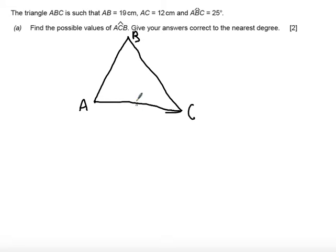We're told the length AB is 19 centimeters so we can label that side 19 centimeters. AC is 12 centimeters so I can label that side 12 centimeters and the angle ABC is 25 degrees. So there's the angle ABC.